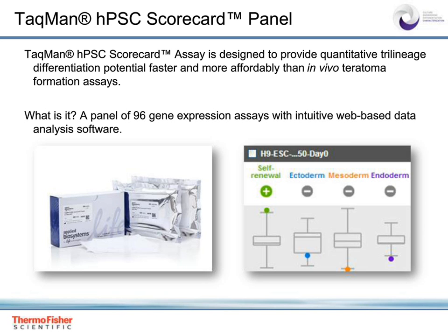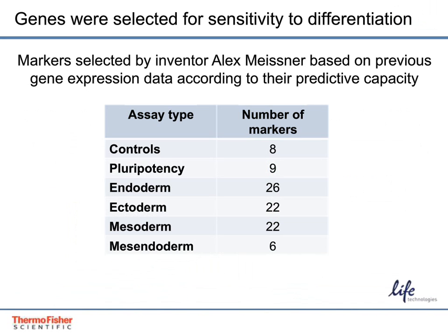The genes included in the HPSC scorecard panel were carefully selected for upregulation during early germ layer specification, whether by spontaneous or directed differentiation. The majority of the genes tested are associated with one of the three embryonic germ layers to provide a high degree of sensitivity to differentiation. This gene content is specifically tailored for early stages of differentiation and is not suitable for analysis of primary or terminally differentiated cells.